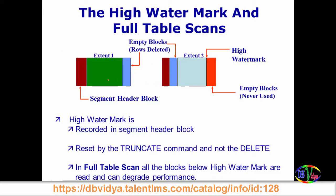What happens is extents contain all the data blocks. This is a header block, and in between you have deleted data. The high watermark means the tail — the end — of that particular table with respect to storage. The segment contains extents, and whatever the last extent is, there will be a pointer. This is a starting point, this is an ending point, and in between all are connected with a linked list. This is called the high watermark.